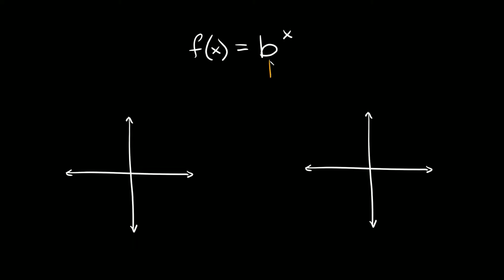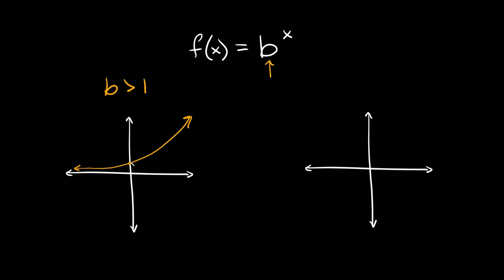The number b tells us if it's exponential growth or decay. If b is bigger than 1, then it's an exponential growth function. On the other hand, if b is somewhere between 0 and 1 — so if it's a decimal or fraction between 0 and 1 — that indicates an exponential decay function.